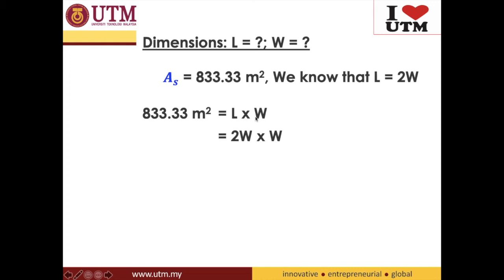And that is 2W times W. And that is 2W squared is equal to 833.33. And then rearrange your W and do that. 833.33 divided by 2 and square root, the answer. And you will eventually get your W to be whatever things that you would like to find out.